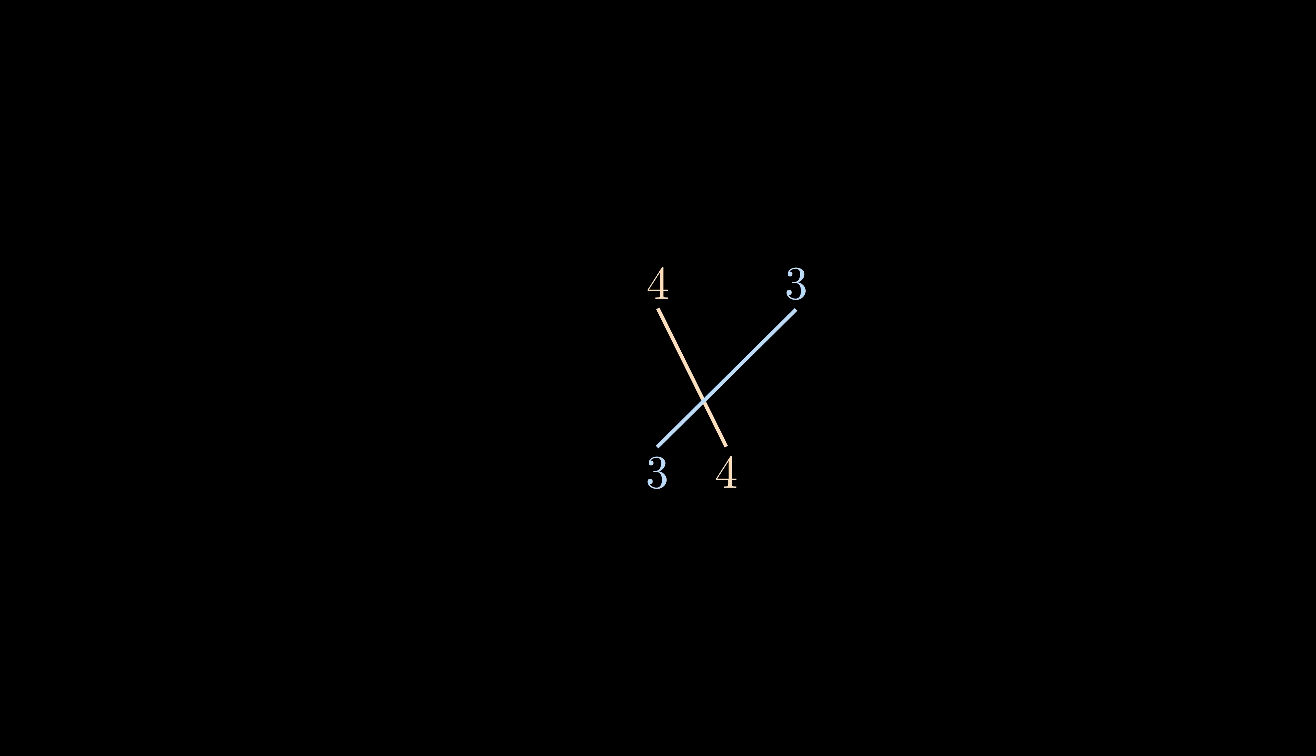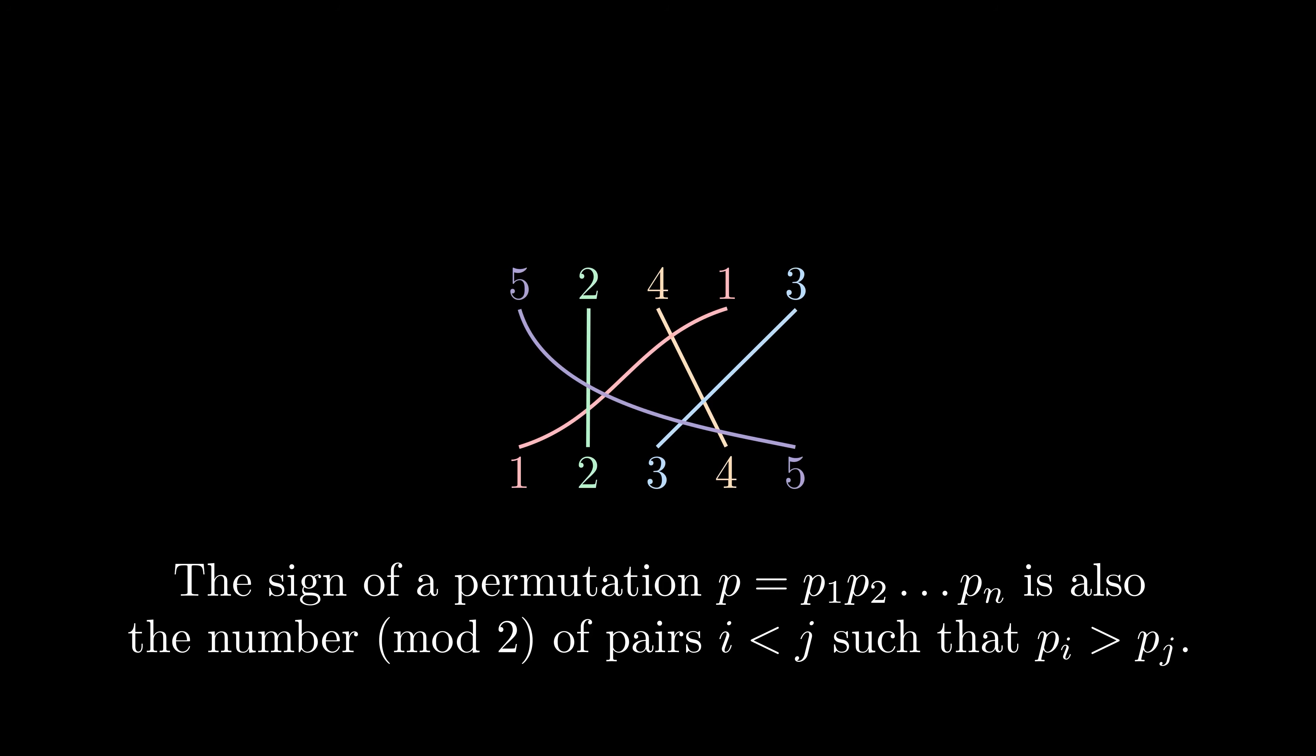Similarly, take 2 crossing lines so that the left number is greater than the right number. Any way you draw these lines, they always cross an odd number of times, so they always contribute 1 to the number of crossings modulo 2.